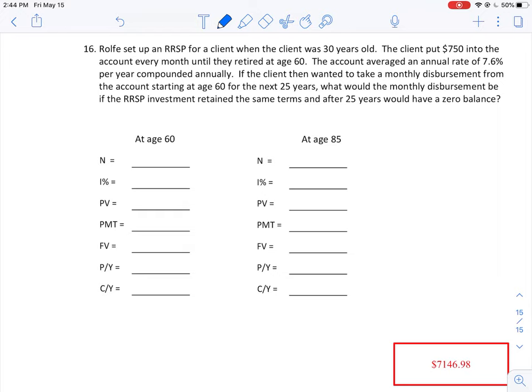We start to take money out of the account down to zero value, and we want to see how long, or in this case, how much we could take out every month given a certain number of years. So if we go through the information here, we have a client who's 30 years old.